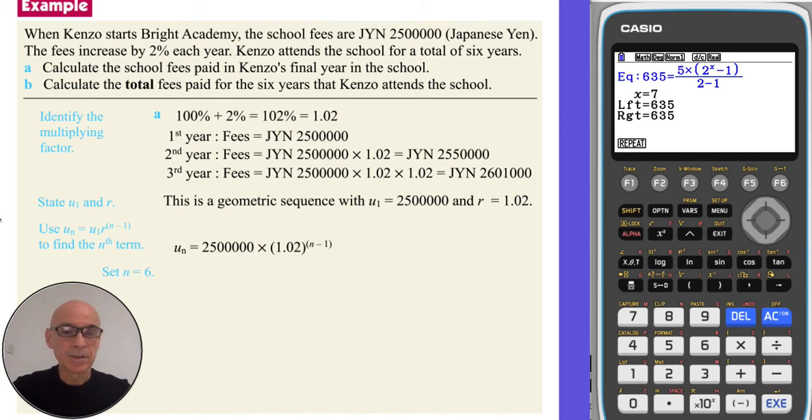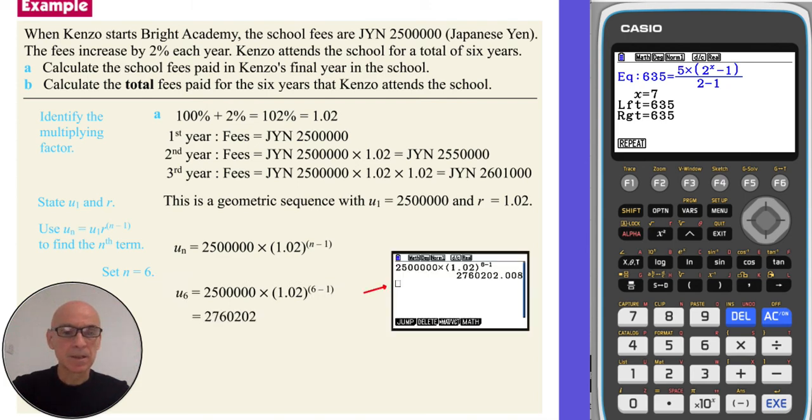So for his final year, if we replace n with 6 to get the required amount. So in his final year, Kenzo's school fees are 2,760,202 yen.